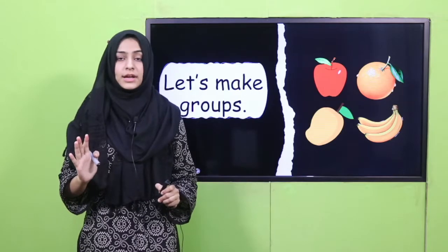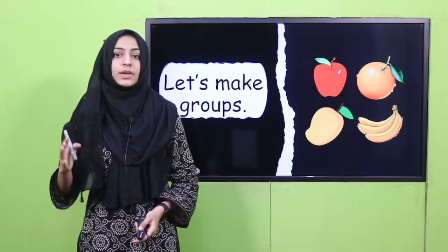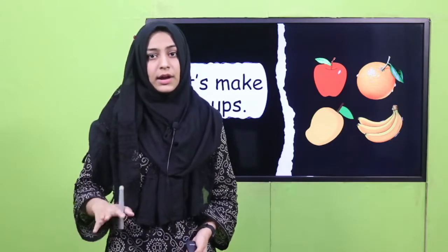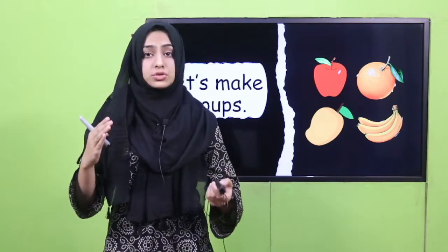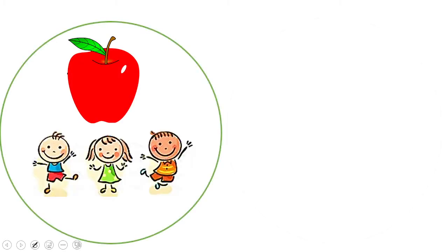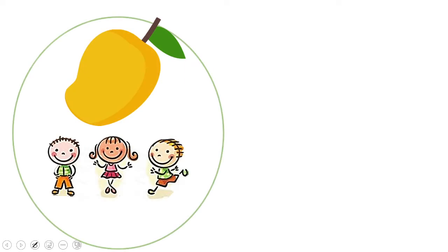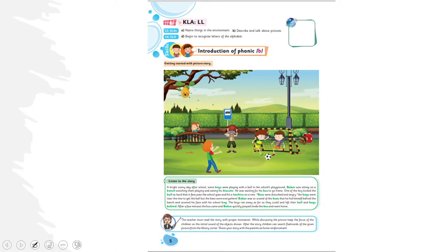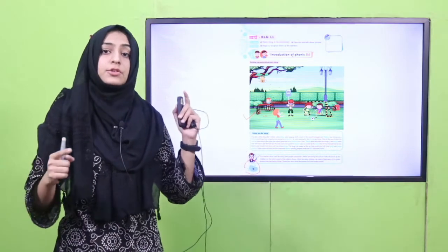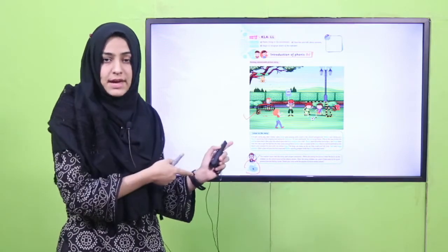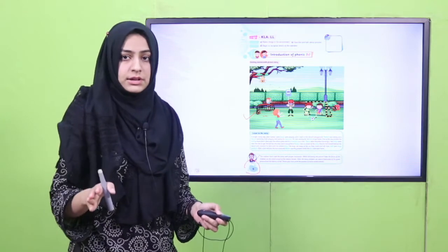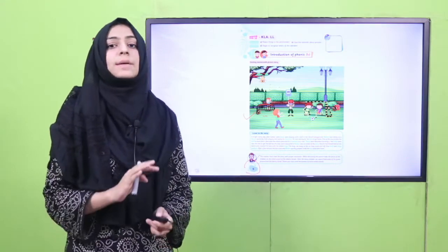Now what is our task? Ab aap log kya karenge — these groups will sit down, apni cheezein side pe rakh denge, and you will focus on the screen. Here are the groups: mango and banana. Now all of you will open your book. Homework dikhane ke baad, ab aap log move karenge next page pe — page number five pe. There is a picture, aur us picture ko main abhi zoom karke bhi dikha dungi on the screen. But you have to get to this page first. Open this page, everyone. Take a minute and then I will come back to you when you have opened your books.